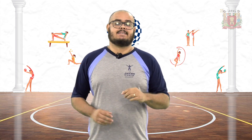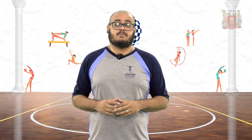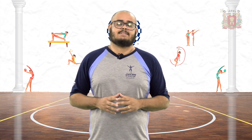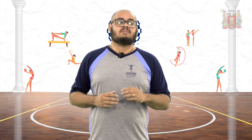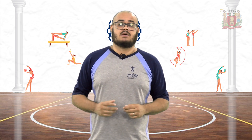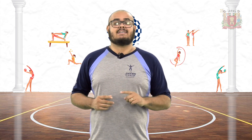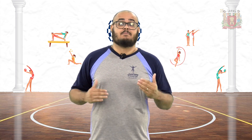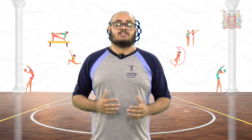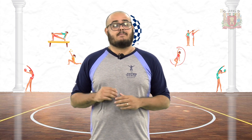O futebol de sete é praticado por atletas com paralisia cerebral, decorrente de sequelas de traumatismo crânio-encefálico ou acidentes vasculares cerebrais. As regras são da FIFA, mas com algumas adaptações feitas pela Associação Internacional de Esporte e Recreação para Paralisados Cerebrais. A modalidade é exclusivamente praticada por atletas homens. Cada time tem sete jogadores, incluindo o goleiro.